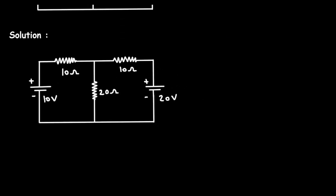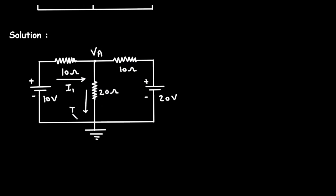We will take this circuit and let's say this node is node A with voltage VA. Here we are considering this as a reference node. So we have to assume all the currents towards this reference node. Let's say this is current I1, this is current I2, and this is current I3. We are assuming all the currents towards this reference node.